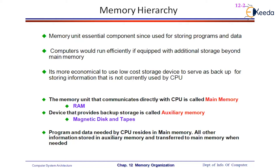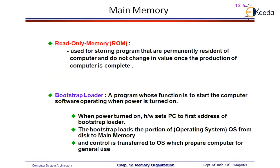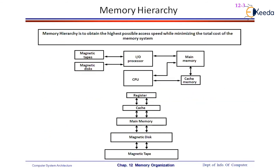Whenever we want to execute any particular program, it will get transferred from secondary memory to the main memory, because this is an important rule to execute any program. It is more economical to use a low-cost storage device to serve as a backup for storing information not currently used by the CPU. The main memory is simply going to hold the current programs being executed.